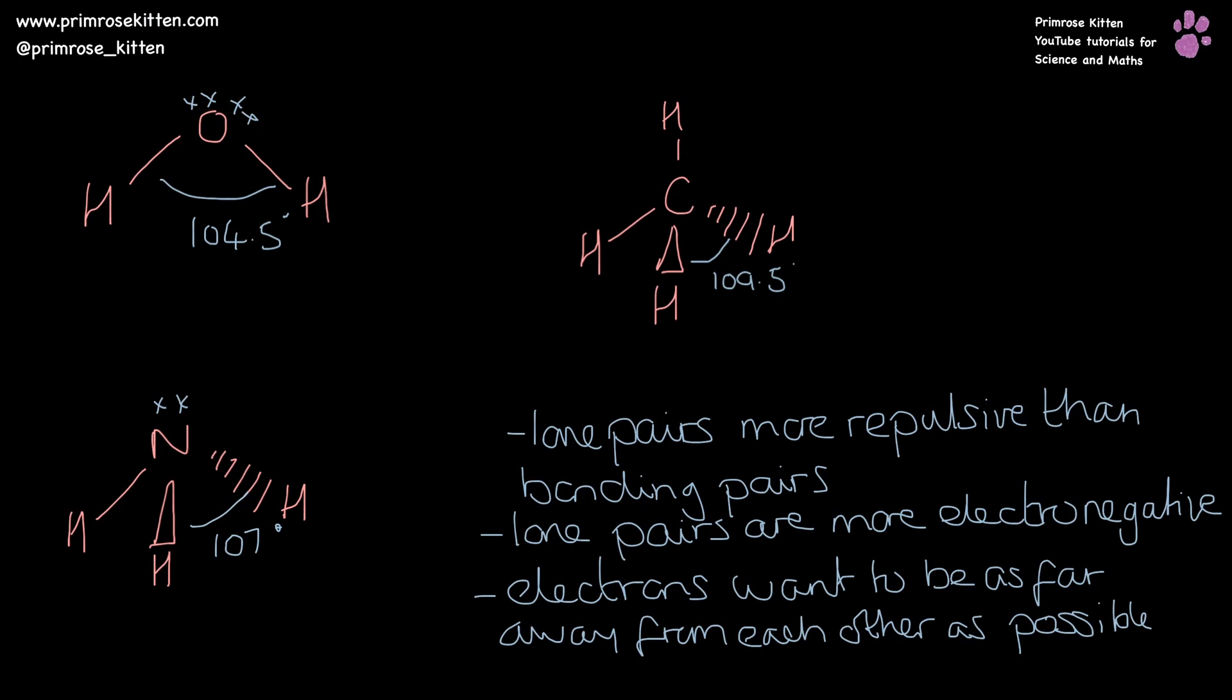And here we have two massively electron dense areas forcing these bonding pairs down. Now, as a rough rule of thumb, each lone pair reduces the bond angle by two and a half degrees.